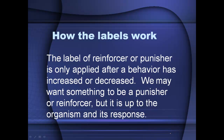The label of reinforcer or punisher is only applied after a behavior has increased or decreased. We can plan punishments and reinforcements, but we can't actually label them appropriately until afterward. We may want something to be a punisher or reinforcer, but it is up to the organism and its response. We can plan, but it doesn't always work out that way. So that's a quick overview of operant conditioning.